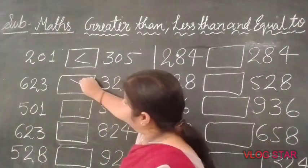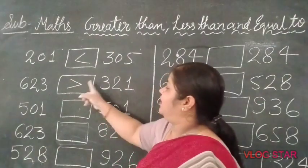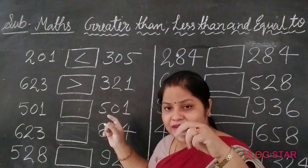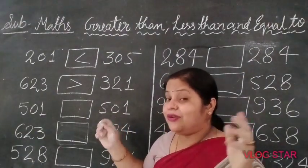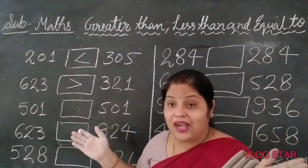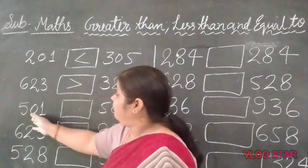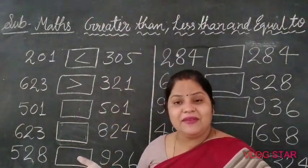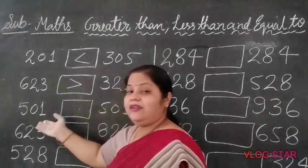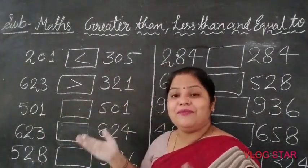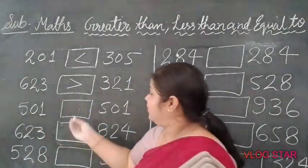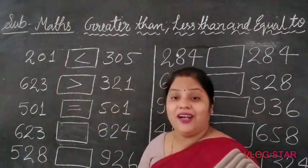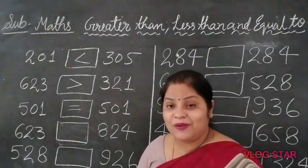How do you do this? You will have less here, you will have more — here more 1, the more 1. Then 501 and 501 — same, same number. 501 equals 501. Equal.